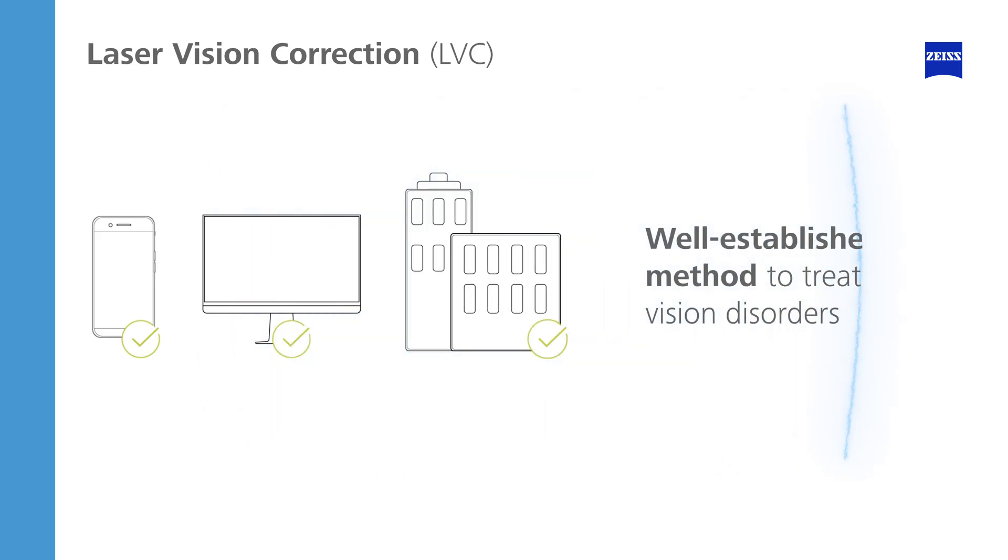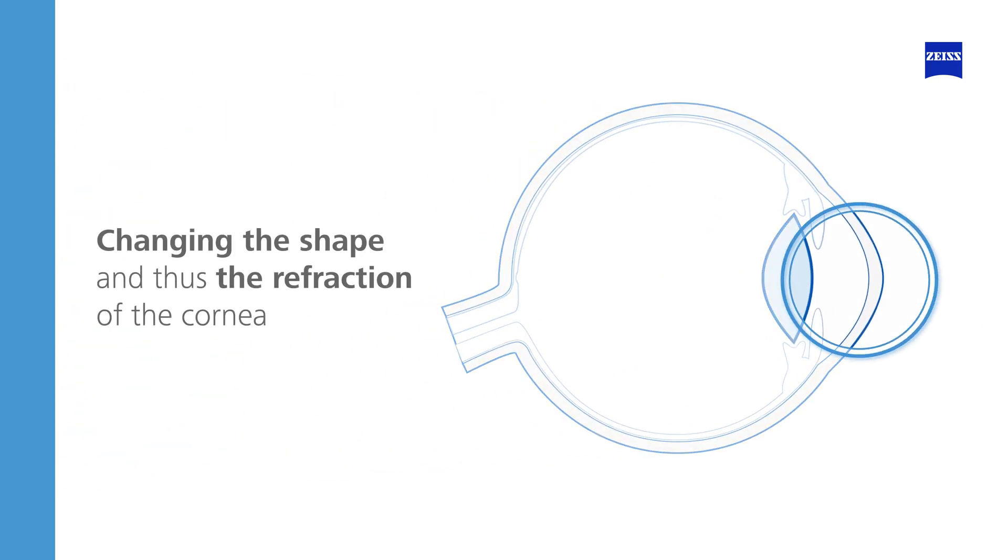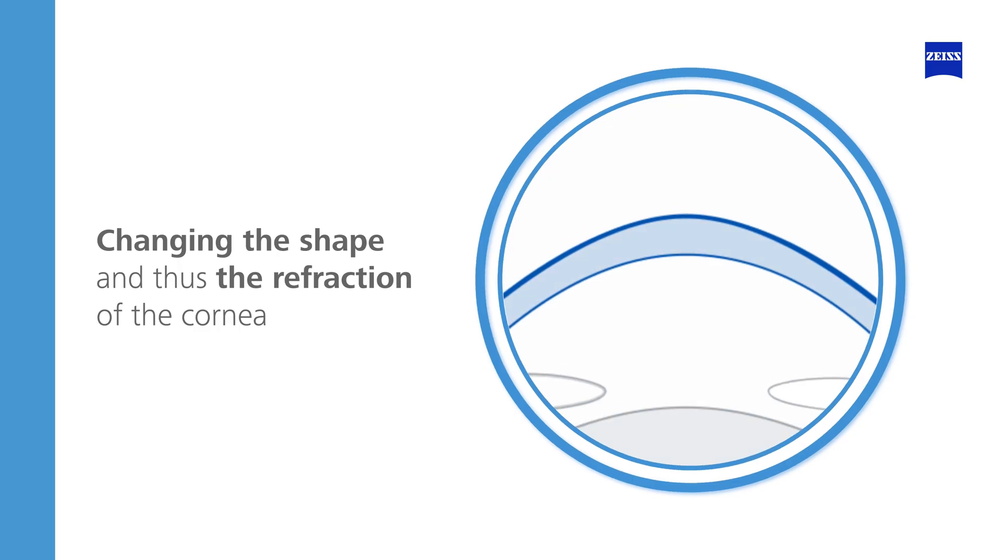Laser vision correction is a well-established method to treat vision disorders by changing the shape and thus the refraction of the cornea with the help of laser technology.